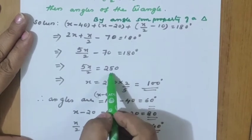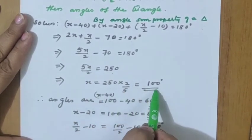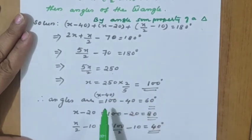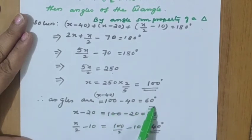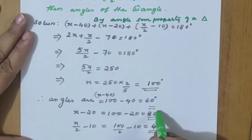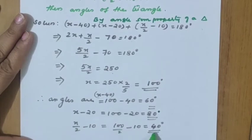Taking −70 to the other side: 5x/2 equals 250 degrees, so x equals 100 degrees. Each angle: x minus 40 is 100 minus 40 equals 60 degrees; x minus 20 is 100 minus 20 equals 80 degrees; x/2 minus 10 is 50 minus 10 equals 40 degrees.